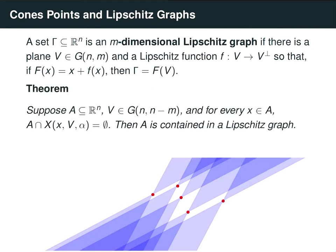The following theorem says: if we have a set A and an n-m dimensional plane v such that for every x in A, the infinite cone centered at x with axis v and aperture alpha has empty intersection with A, then A is contained inside a Lipschitz graph. In the plane, it's easier to see why this is true. If these are points in A, each one is a cone point, and no point is inside the cone of any other point. The graph is going to be roughly the lower envelope of the upper cones.